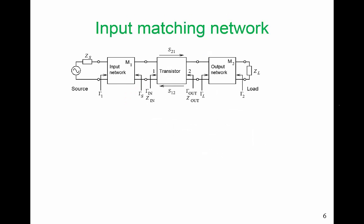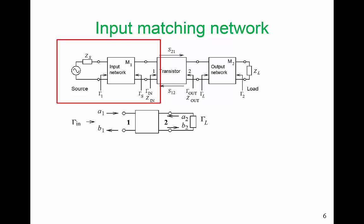Let's talk about some of our design issues, and we'll just look at the input matching network here. So we're just looking at that section. Gamma-Rin, looking into our transistor, will depend on the load. Let's just take our load as gamma-L, so here is our gamma-L here. And it will depend on all of the S parameters of our transistor.